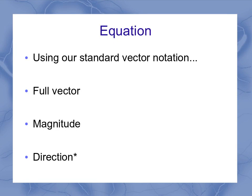Using our standard vector notation, we can write our full position vector as r with the vector sign over it. It has two components x and y, so r vector equals x i hat plus y j hat. The magnitude is how long it is, using absolute value signs for r. That's the square root of x squared plus y squared.